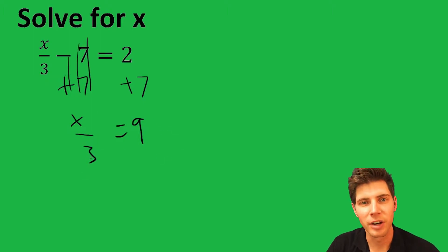Next, to get rid of this divided by 3, we want to multiply both sides by 3. We're trying to undo that division, and the opposite of divide is multiply.